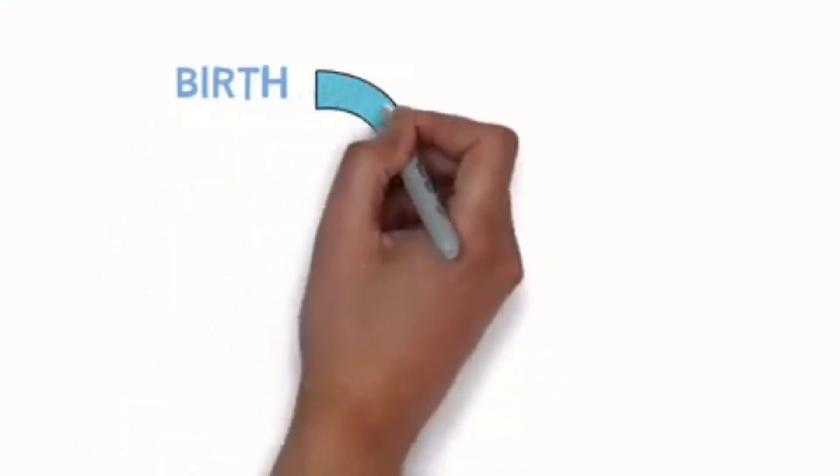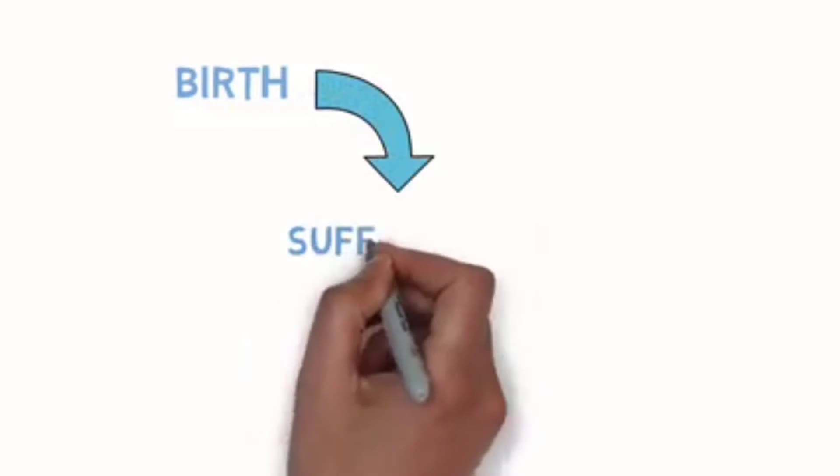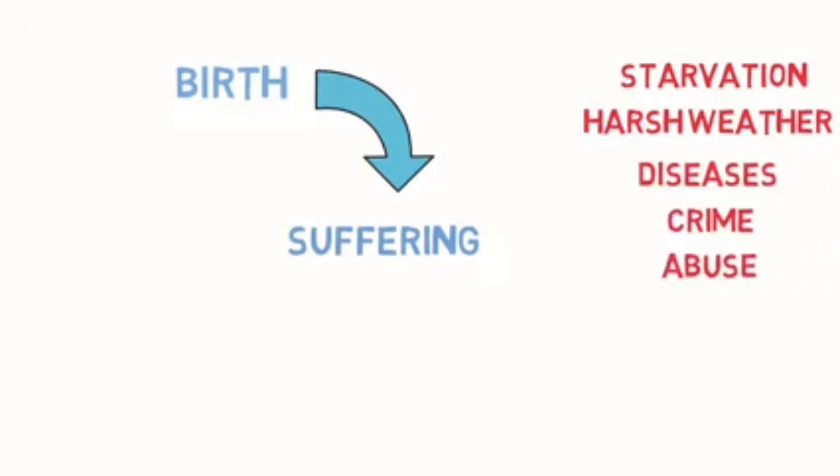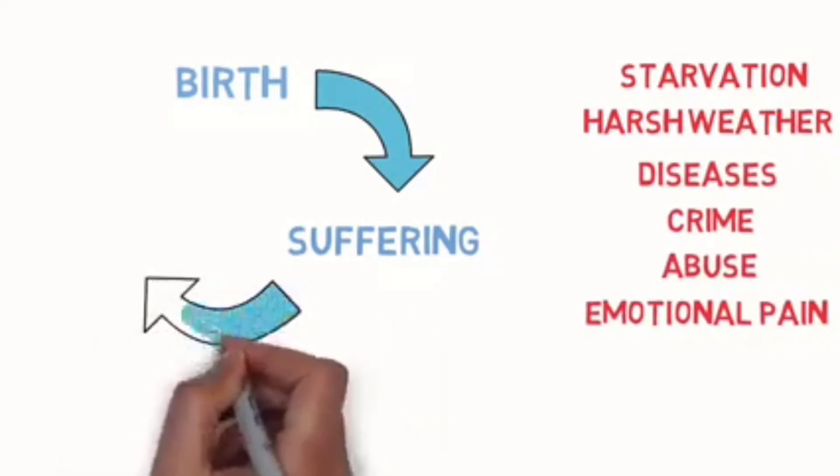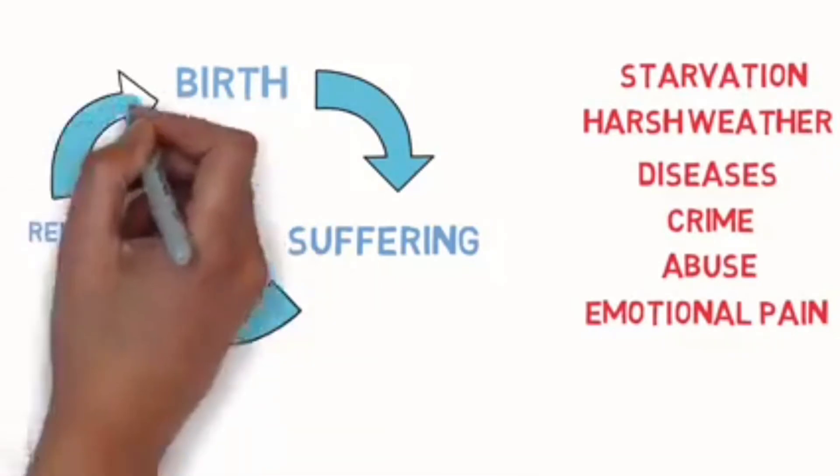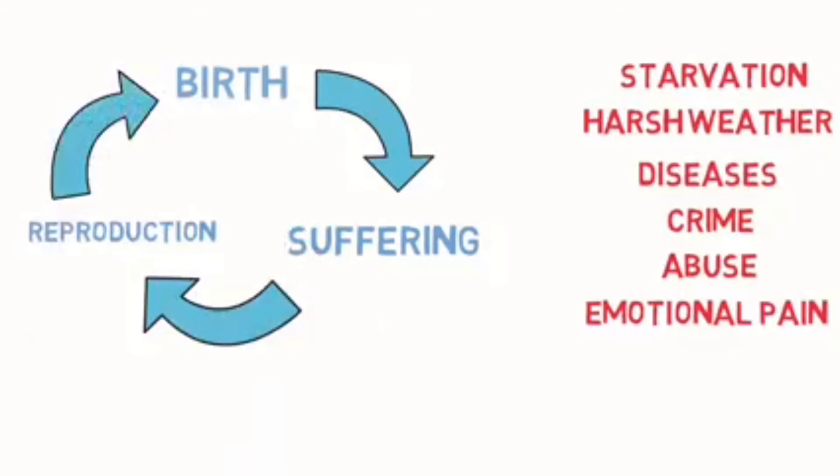First, a living being is born into this world. And then it starts to suffer from starvation, harsh weather, diseases, crime, abuse, emotional pain, etc. And then they reproduce and give birth to a fresh batch of organisms that will suffer and die again, continuing the cycle.